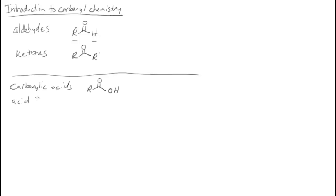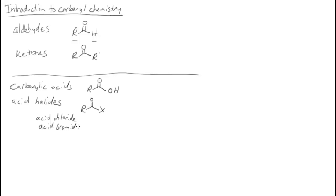We have acid halides. In an acid halide, we have an R group on one side of the carbonyl and some kind of halogen on the other side. You can have subgroups: acid chloride, acid bromide — those are the two most common ones. You can also have acid fluoride or acid iodide. So for an acid chloride, it's just RCOCl.